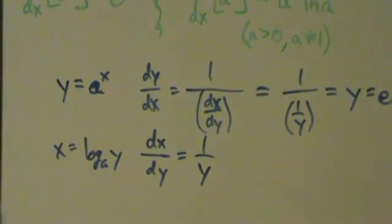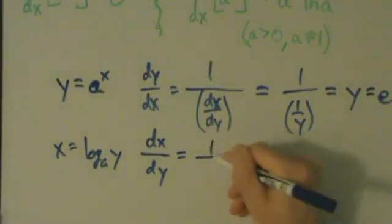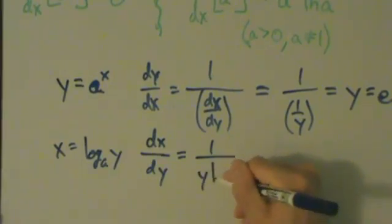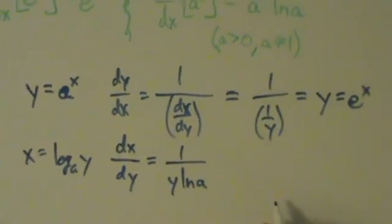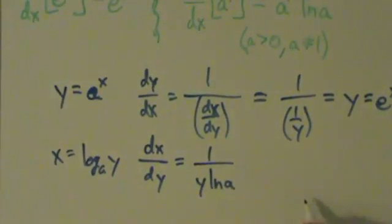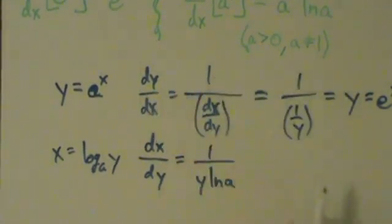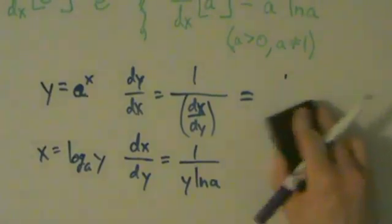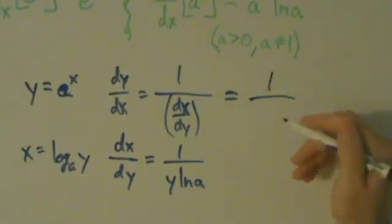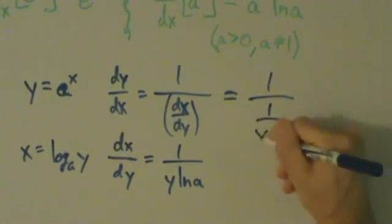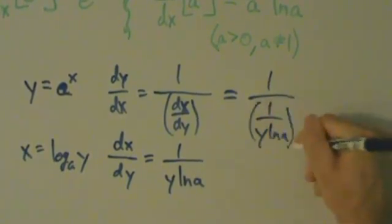So then dx dy, we know from an earlier video, that's actually going to be 1 over y ln a. So then dy dx equals 1 over dx dy, that's still the same, that's just the inverse function theorem. And now what we have here is 1 over y ln a, like this.